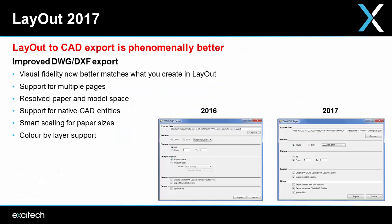Exporting to DWG or DXF has also been massively improved. Previously a 10-page Layout file would export as 10 separate drawings; now you'll get one drawing with 10 separate Layout tabs. In the old days, Layout entities would explode into raw geometry in DWG exports, which was a pain to manage. Nowadays the styles, tables, circles, and everything else will import smartly into applications like AutoCAD.